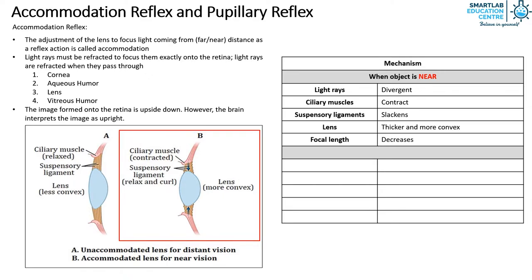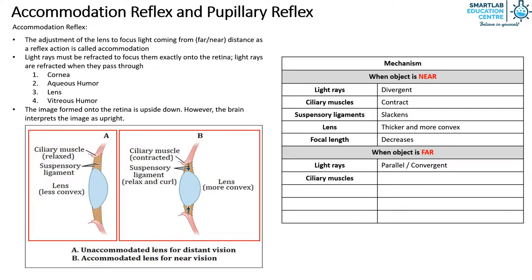When the object is far, the light rays entering the eye are parallel or convergent. The ciliary muscles relax. The suspensory ligaments become taut. This causes the lens to be thinner and less convex, increasing the focal length.